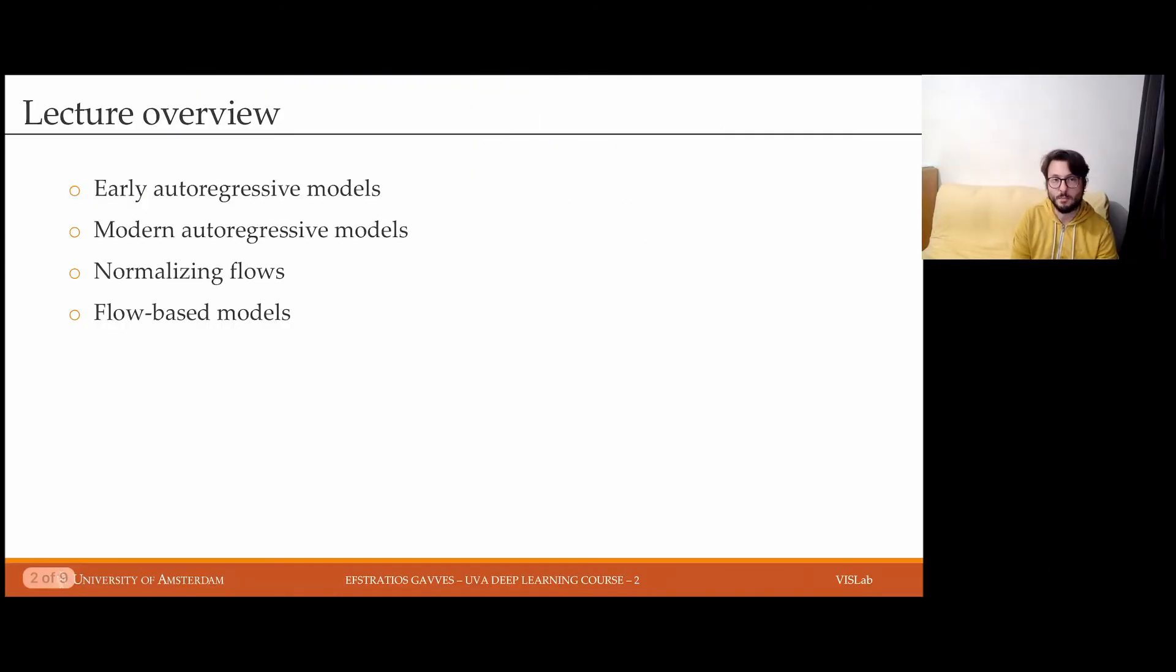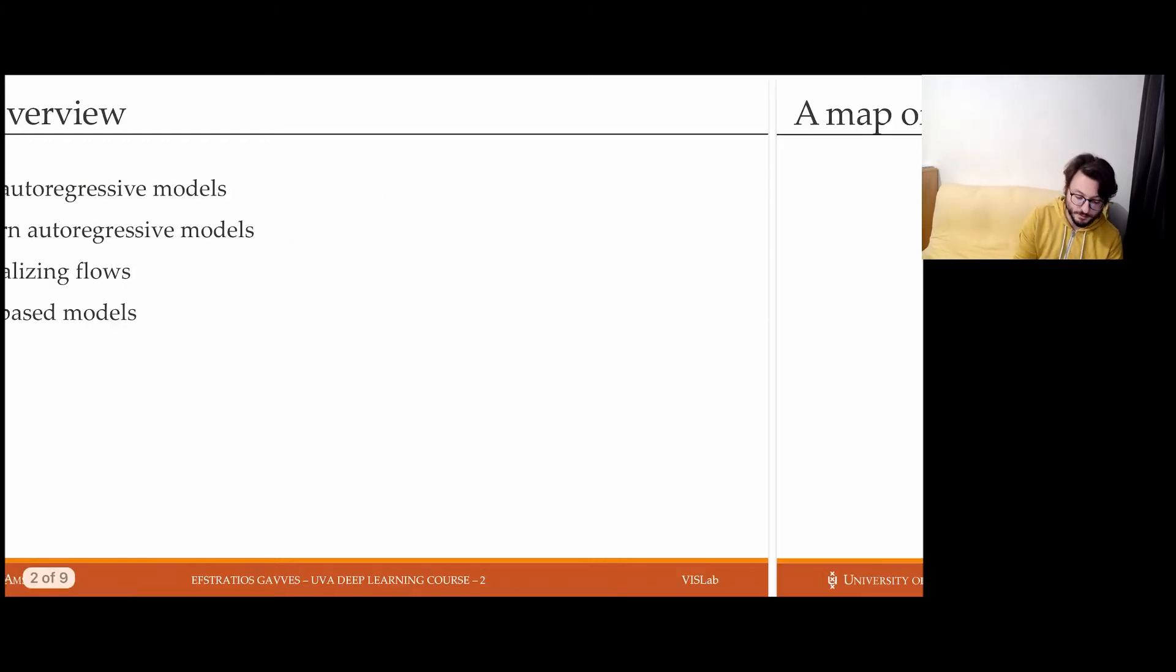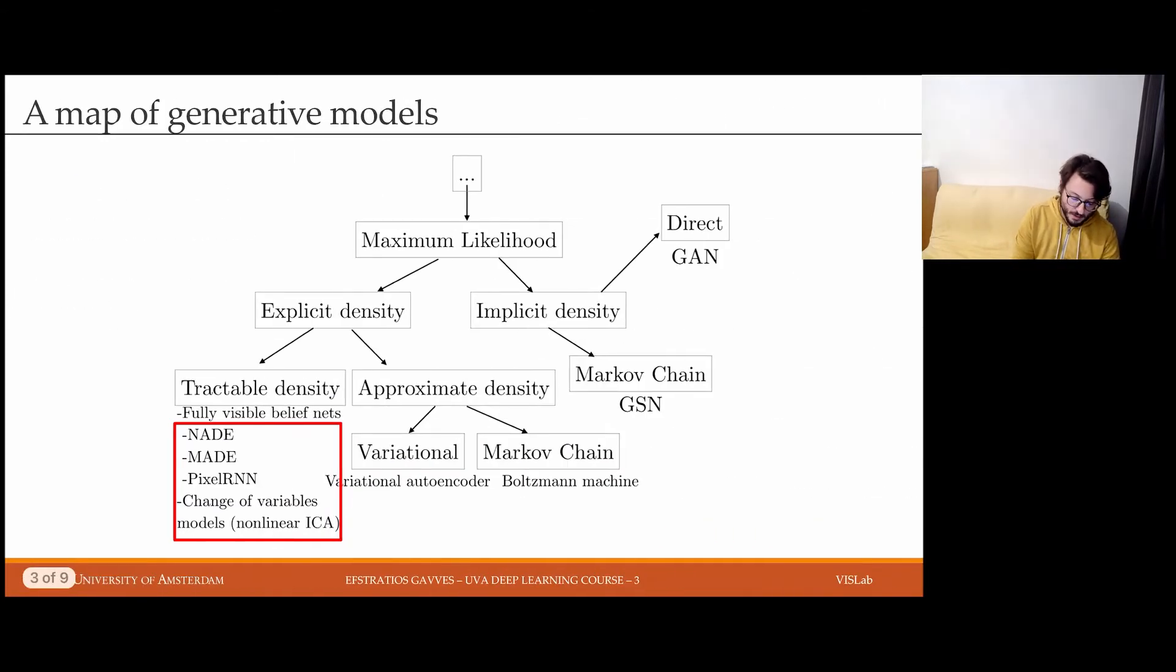Today we're going to be discussing early autoregressive models, the early predecessors of advanced generative models, and we're going to cover some modern variants of autoregressive models. We're also going to be discussing normalizing flows as well as flow-based models. Specifically in our chart of generative models we're going to be focusing on models that have tractable density estimation, and examples are NADE, MADE, pixel RNN and change of variable models.